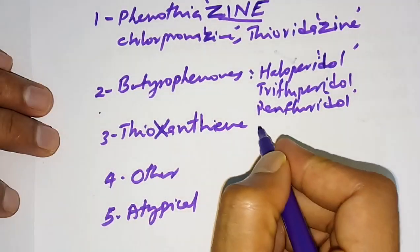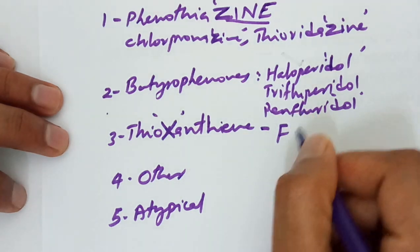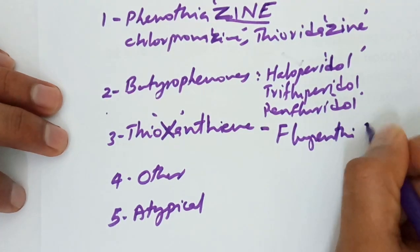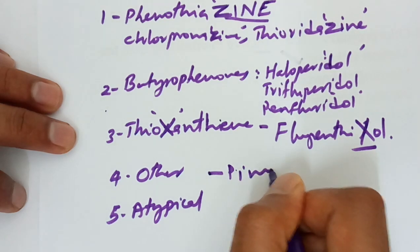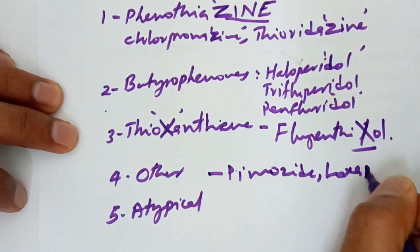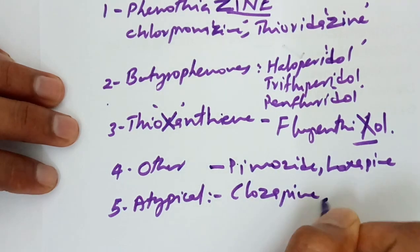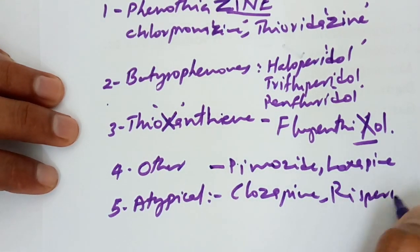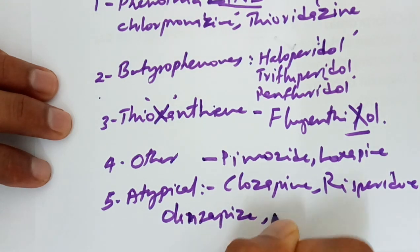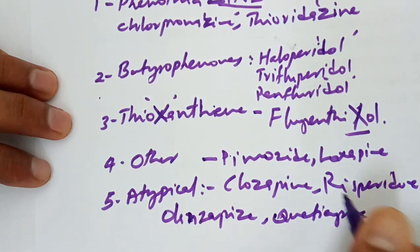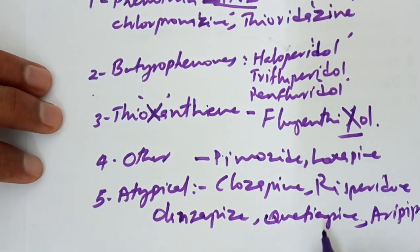For thioxanthines, drug names contain '-X-'. An example is flupentixol. Under other types, examples include pimozide and loxapine. Examples of atypical antipsychotics are clozapine, risperidone, olanzapine, quetiapine, aripiprazole, and ziprasidone.